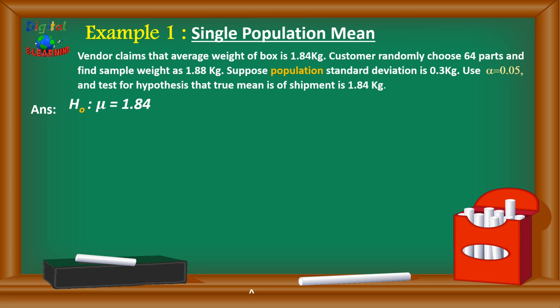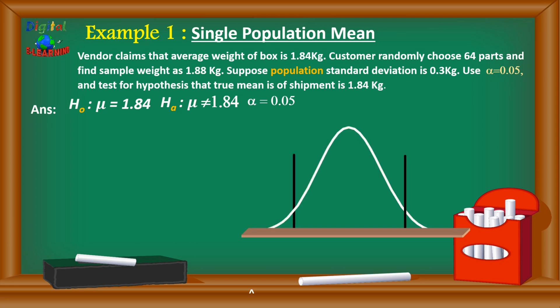My null hypothesis is that mu equals 1.84 kg, and the alternate hypothesis is that it is not equal to 1.84 kg. Alpha, or level of significance, is 0.05. Let's plot this on the normal distribution curve, marking the rejection area. If the result falls in the red region we reject the null hypothesis; if it falls in between we fail to reject the null hypothesis.